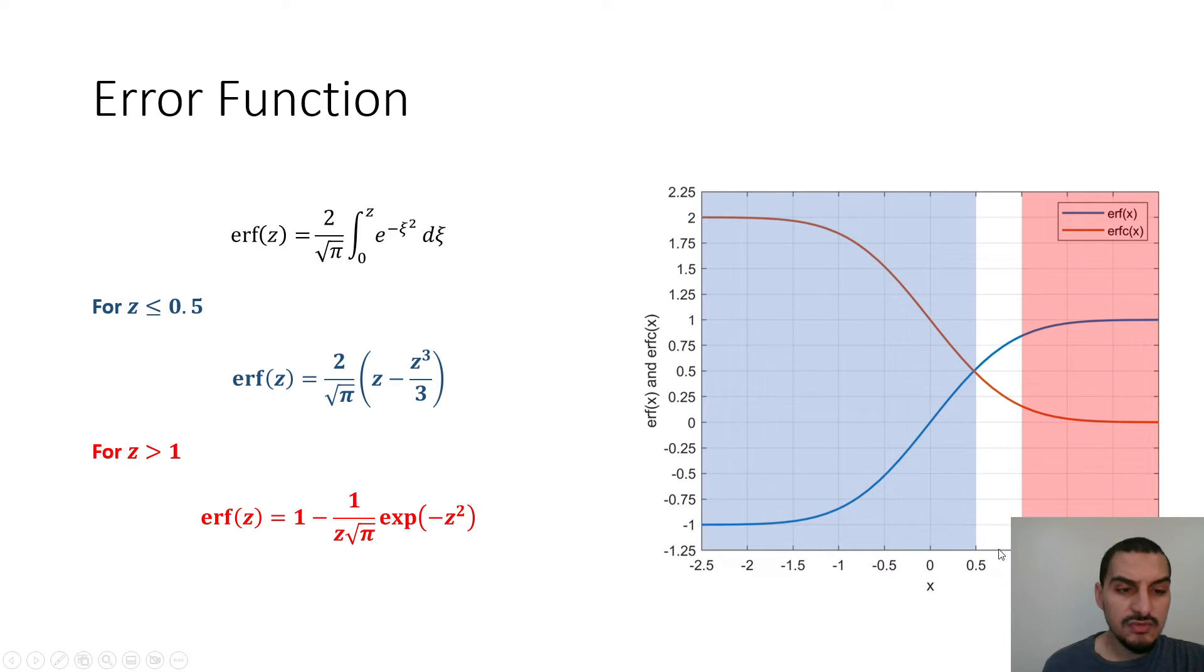In the red region for z is larger than 1, you can use this formula, which is 1 minus 1 divided by z squared root pi multiplied by exponential of negative z power 2. So these are some approximations that might be useful in some cases that you can use instead of using the error function, which might be more easier to handle mathematically.